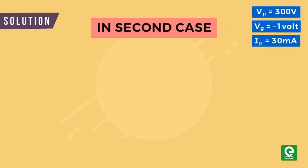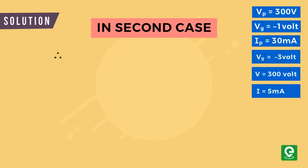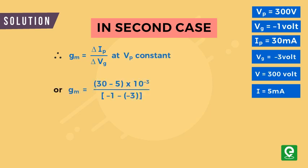In the second case, grid voltage is given to be -3 volts, plate voltage is 300 volts, and plate current is 5 milliamperes. Therefore, the trans-conductance at constant voltage is equal to ΔI_p divided by ΔV_g. Calculating g_m by putting values, we get g_m = 12.5 × 10^-3.